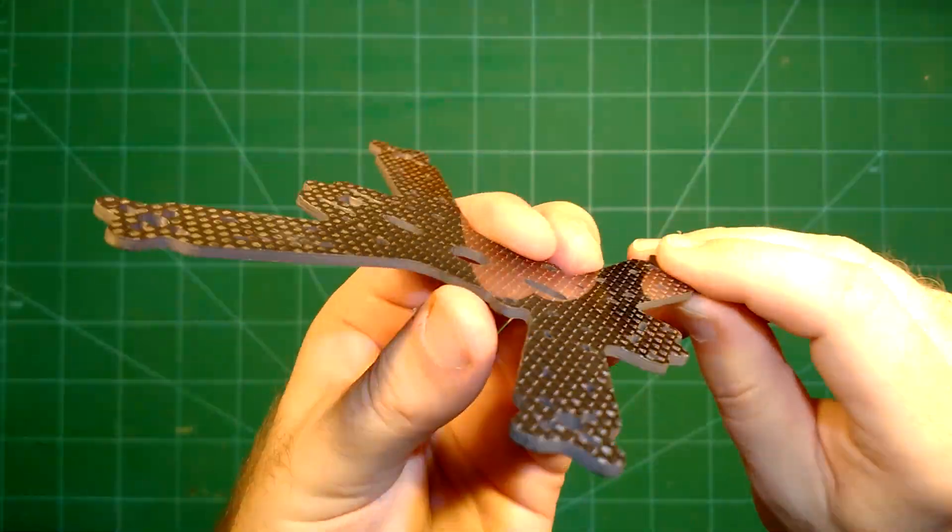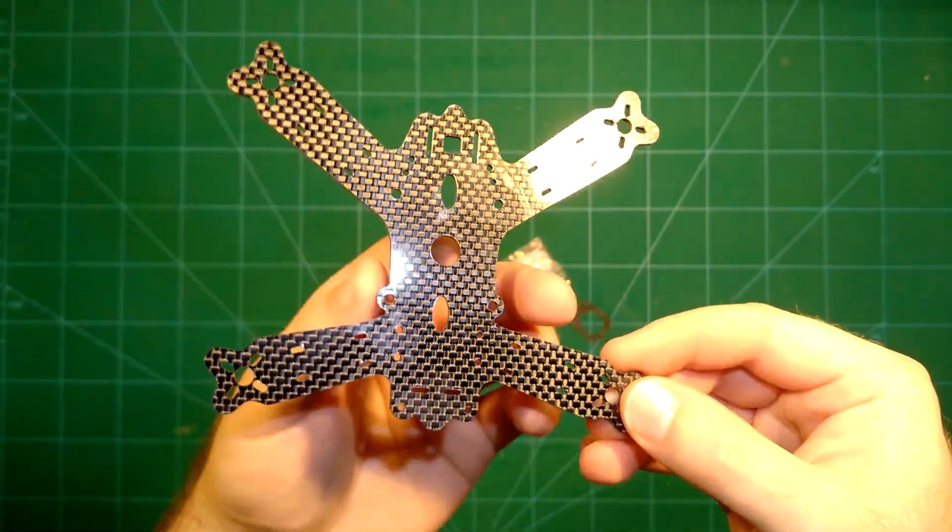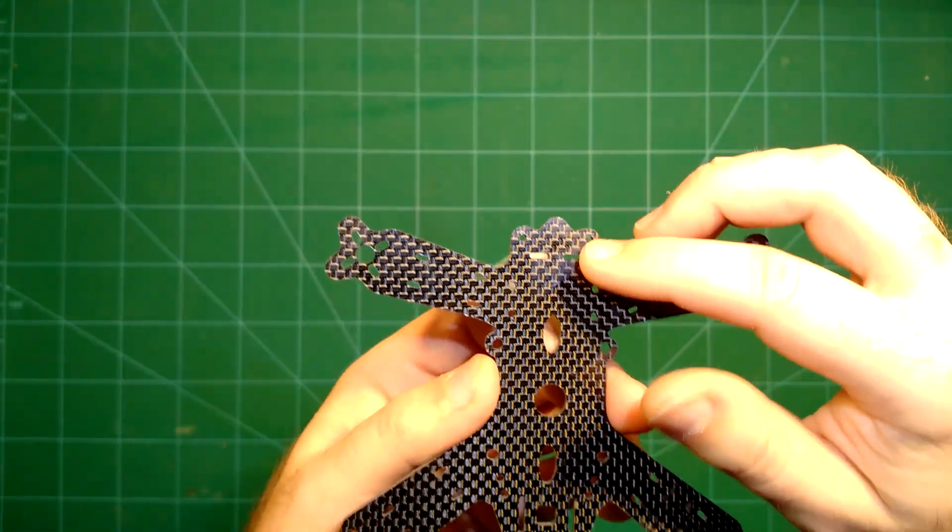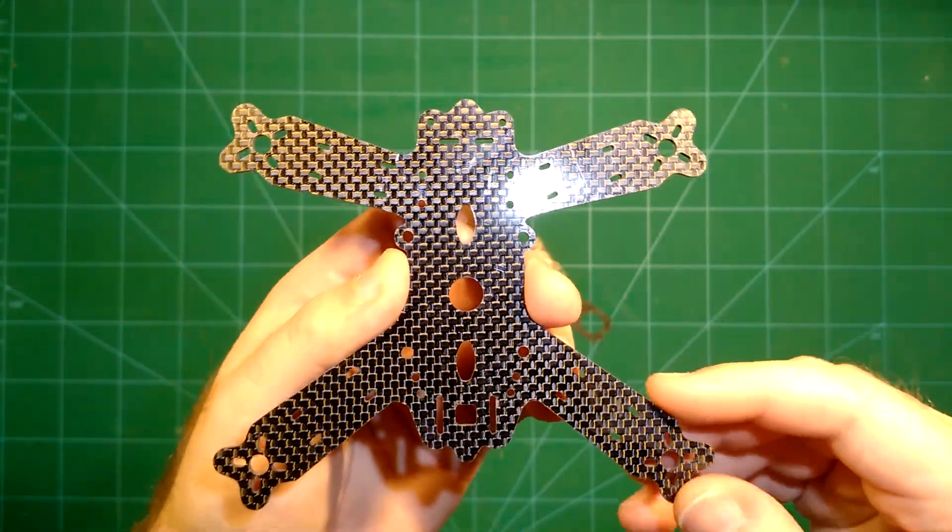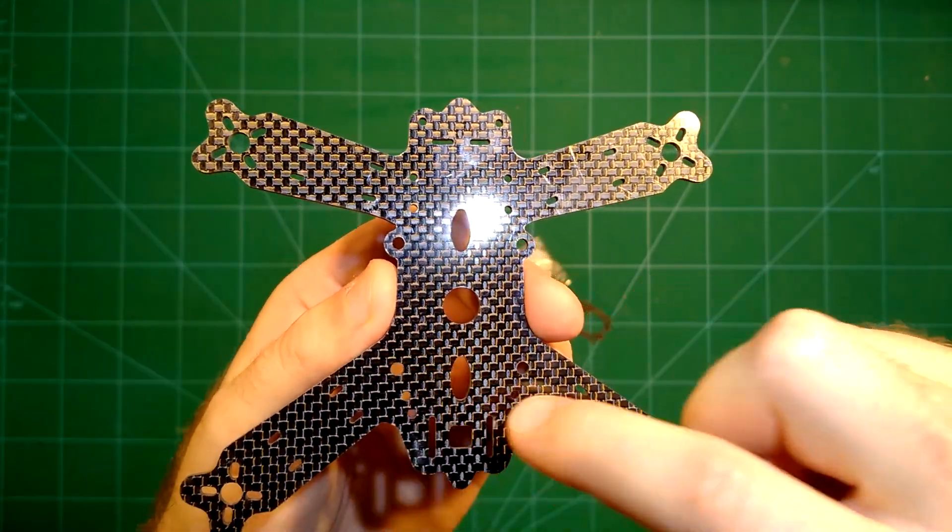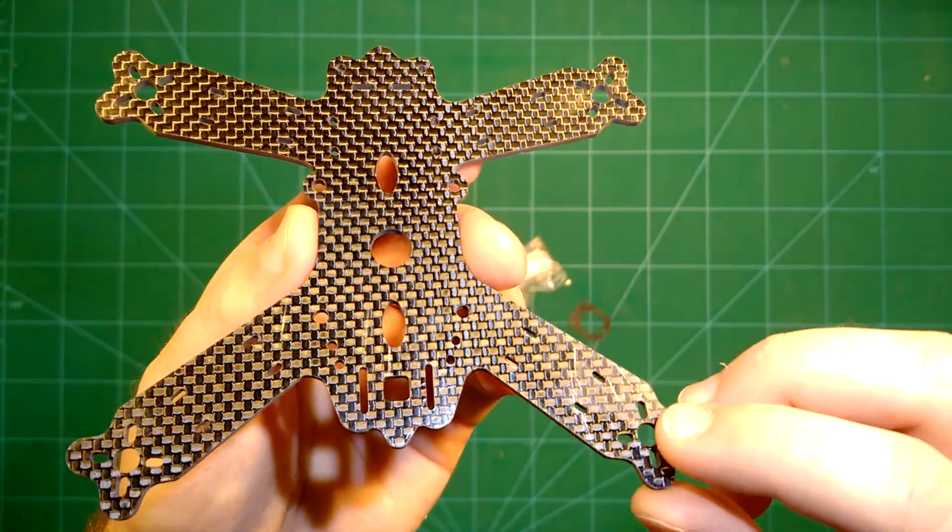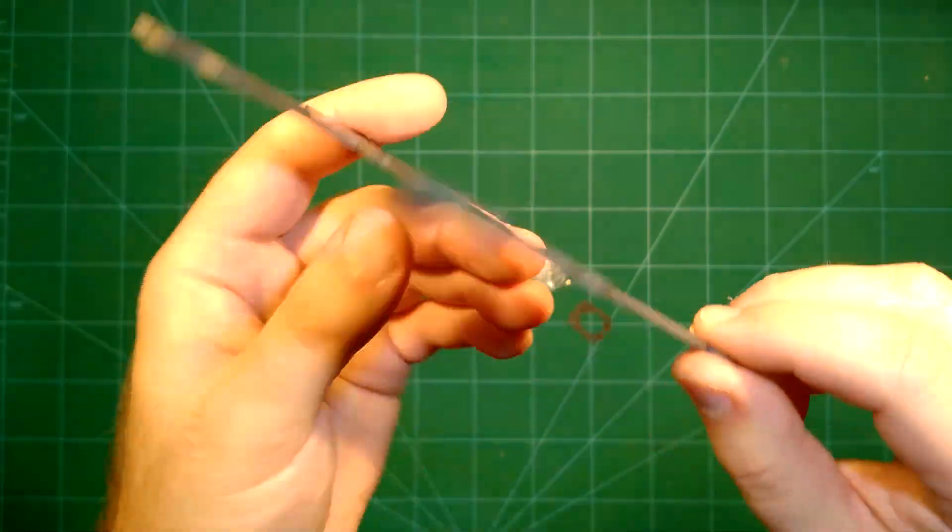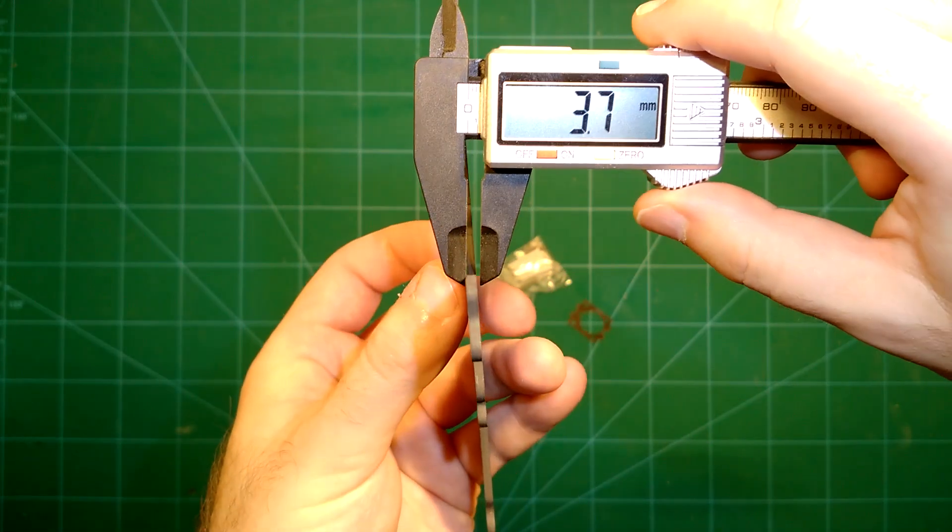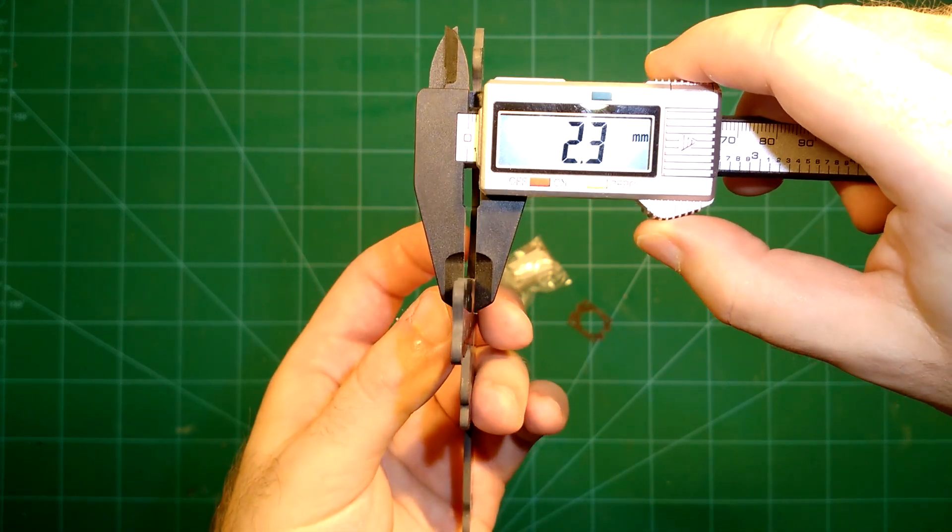So this is of course the bottom plate of this frame, of this carbon fiber frame. It's a 130 size frame. And it's really nice because as you can see the arms, actually that's the front. The front arms come at a different angle than the arms on the back. We have here your usual holes for mounting the flight controller. And here probably to spare some weight we have some holes here. Let's take a look at the width of this bottom plate. And this bottom plate comes at a bit more than 2 millimeters, 2.3 millimeters for me.